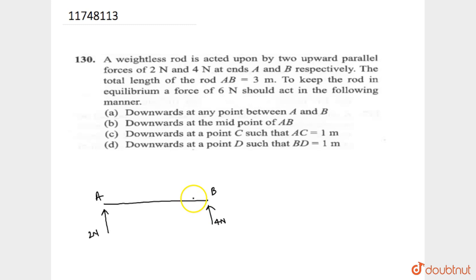To keep the rod at equilibrium, the force of six newton should be acted in the following manner. So, six newton forces. We will also see four newton forces. It means, six newton forces will act in the downward direction between the side and the force.